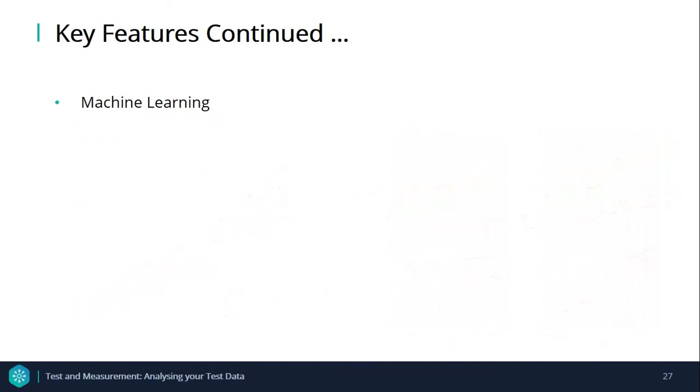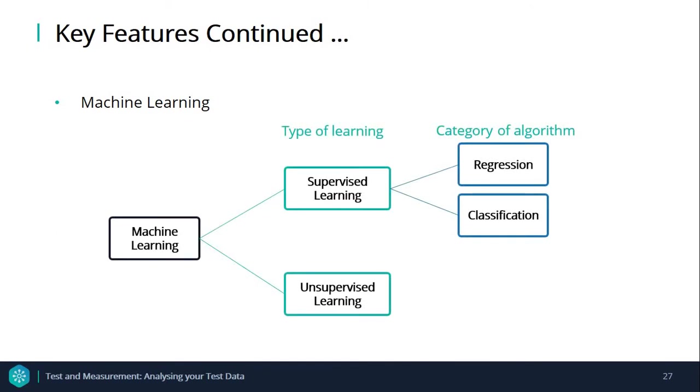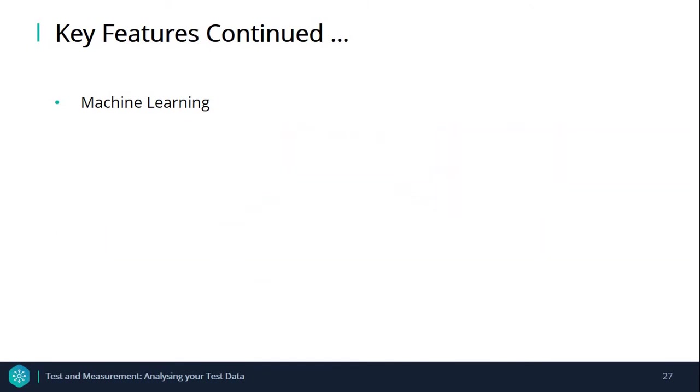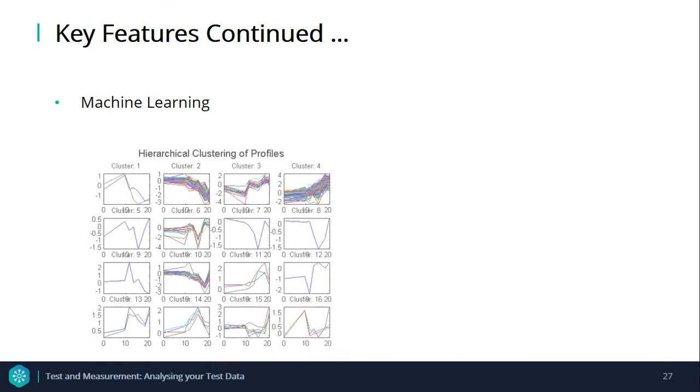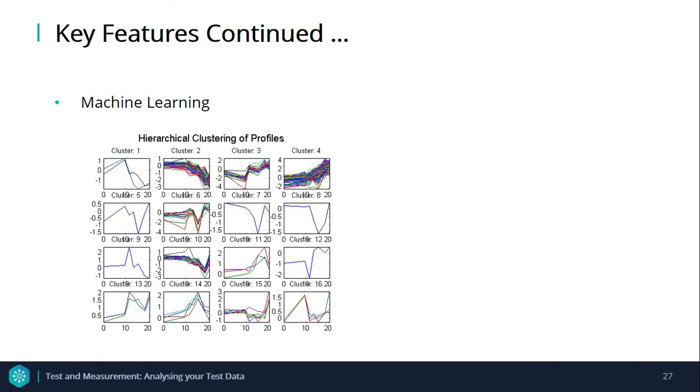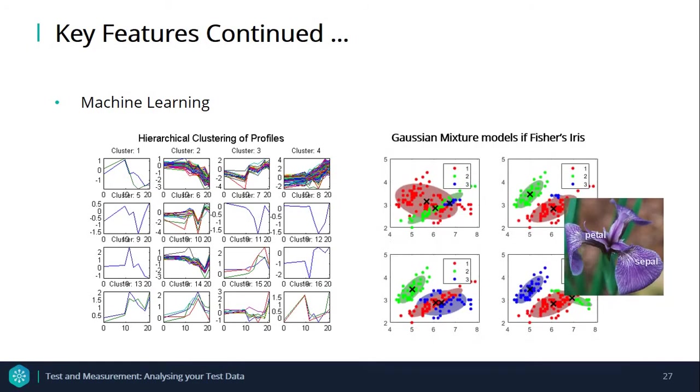Now let's move on to unsupervised learning, which is a single algorithm category, which is clustering. Unsupervised learning is a type of machine learning algorithm used to draw inferences from data sets consisting of input data without labeled responses. Common clustering algorithms include k-means clustering, Gaussian mixture models, hierarchical clustering, and hidden Markov models.